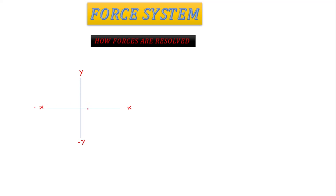We are going to learn how to resolve forces in the x and y components. Let's take the first quadrant. Imagine that there's a force given to us and there's an angle given to us — how are you going to resolve this force? Since it's in the first quadrant, check the signs: x is positive and y is positive. When resolving in the x component, remember to use cosine. We work with the angle formed with the positive x axis.